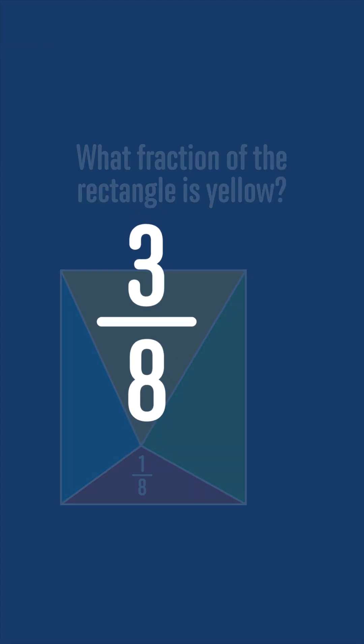The answer to this challenge is that the area of the yellow triangle is three-eighths of the area of the rectangle. Have another go now if you've got something else.